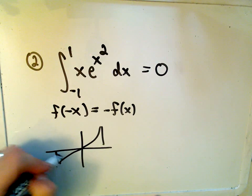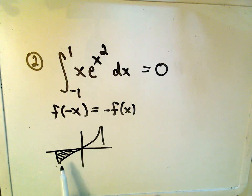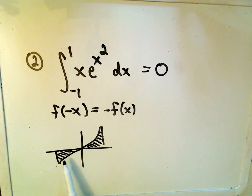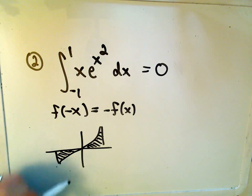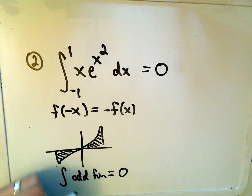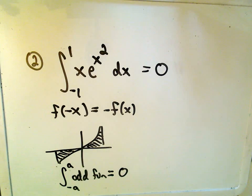If you integrate an odd function over a symmetric interval, what's going to happen is the bottom part is going to cancel out with the top part. So if you integrate an odd function, the resulting integral is always going to equal 0 if you're integrating over a symmetric interval. So let me just remind you of that.